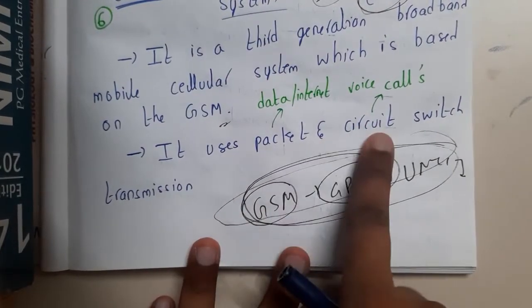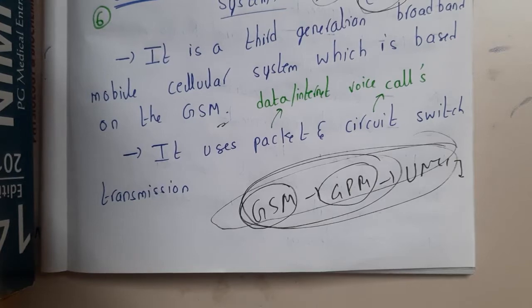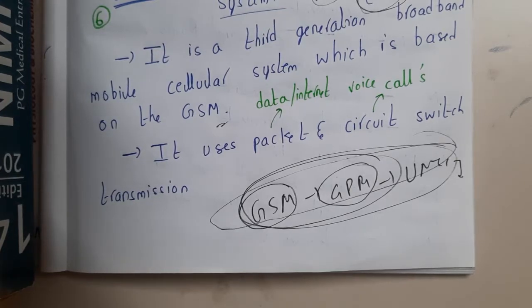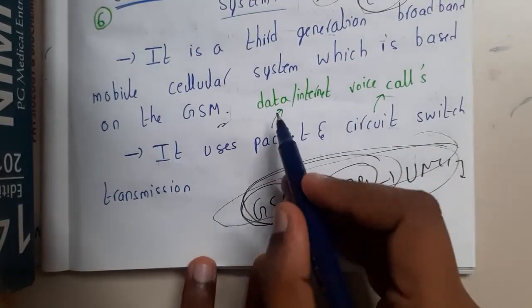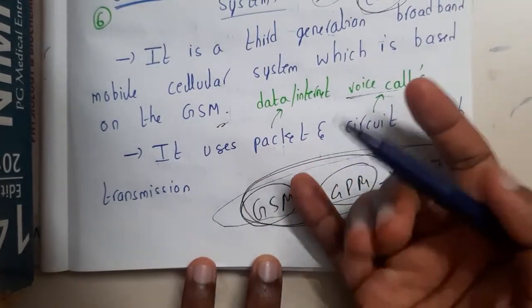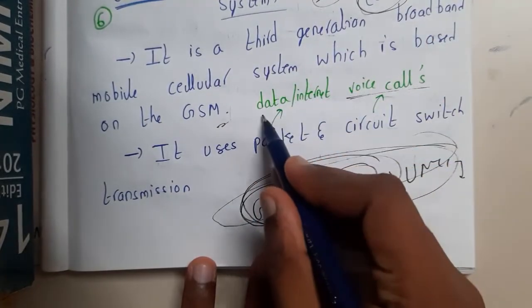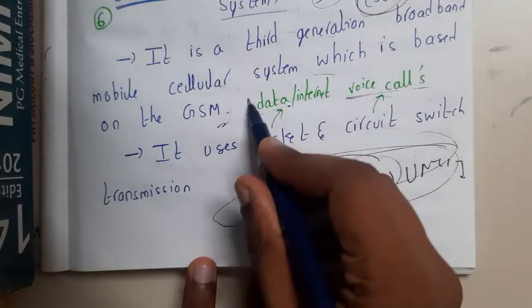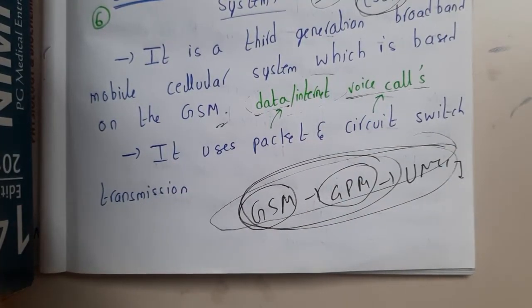UMTS uses both packet and circuit switching transmission. In UMTS you can use it for voice calls, video calls, or any type of calls. Similarly, you can also send data and use the internet. All these features are integrated into this system, which is why it is considered the best.